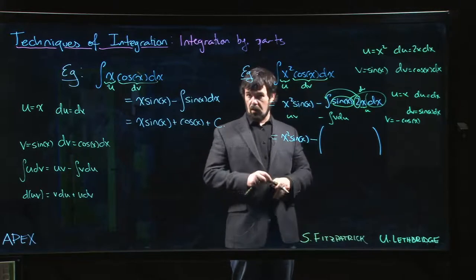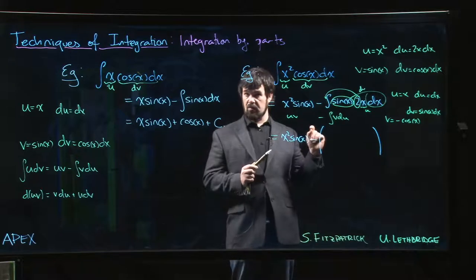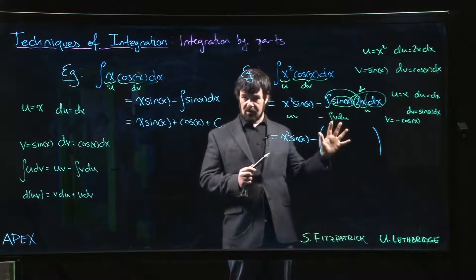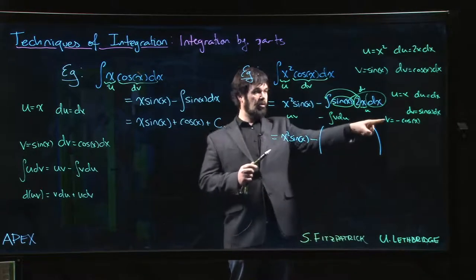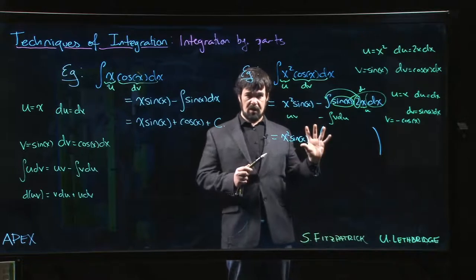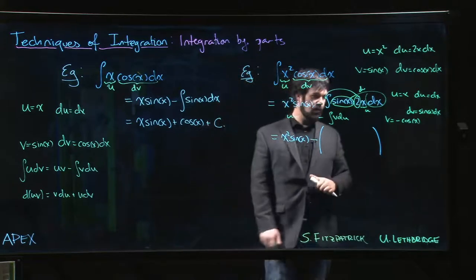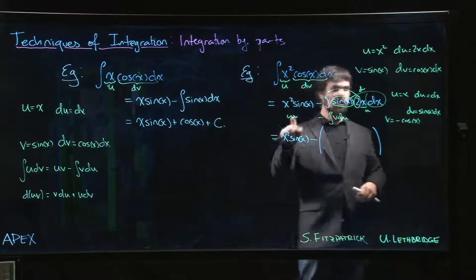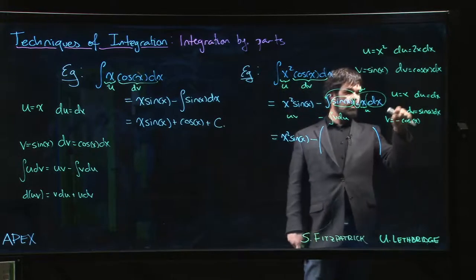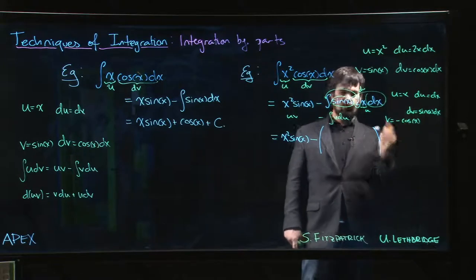Biggest thing that's going to go wrong with multi-step integration by parts is you don't keep track of the minus signs, because there are minus signs introduced at every step, possibly more minus signs. You've got to be careful or you're going to get a sign error and it's going to mess everything up for you. So uv in this case is minus x cos x.